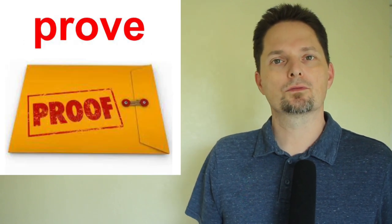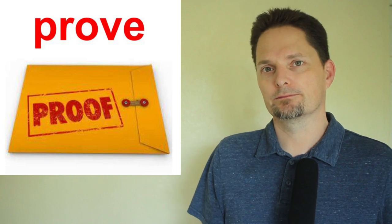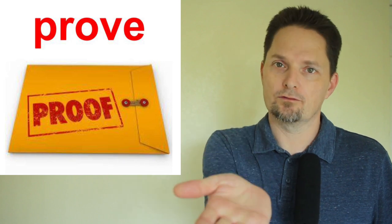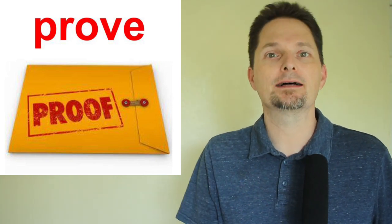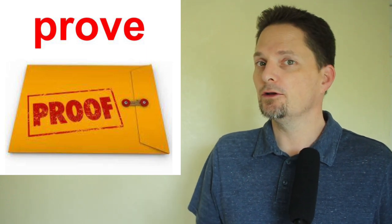Another example: prove, making the long OO sound. Prove is the verb; proof is the noun. I show you the proof — verb: I prove it. I can prove it because I have the proof. I have the evidence, I have the proof, I can prove it. Can you prove it?